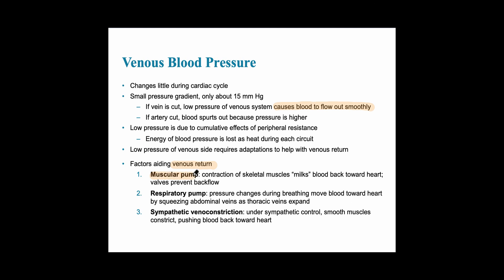Three methods help return blood to the heart. The first is the muscular pump — contraction of skeletal muscles, like the gastrocnemius in the calf, which constrict and push blood back towards the heart. Valves are there to prevent backflow. The second is the respiratory pump: when breathing, it helps move blood towards the heart by squeezing the abdominal veins to create a pressure gradient from high to low. The third is sympathetic venoconstriction; veins have a tunica media with some smooth muscle, though less than arteries.